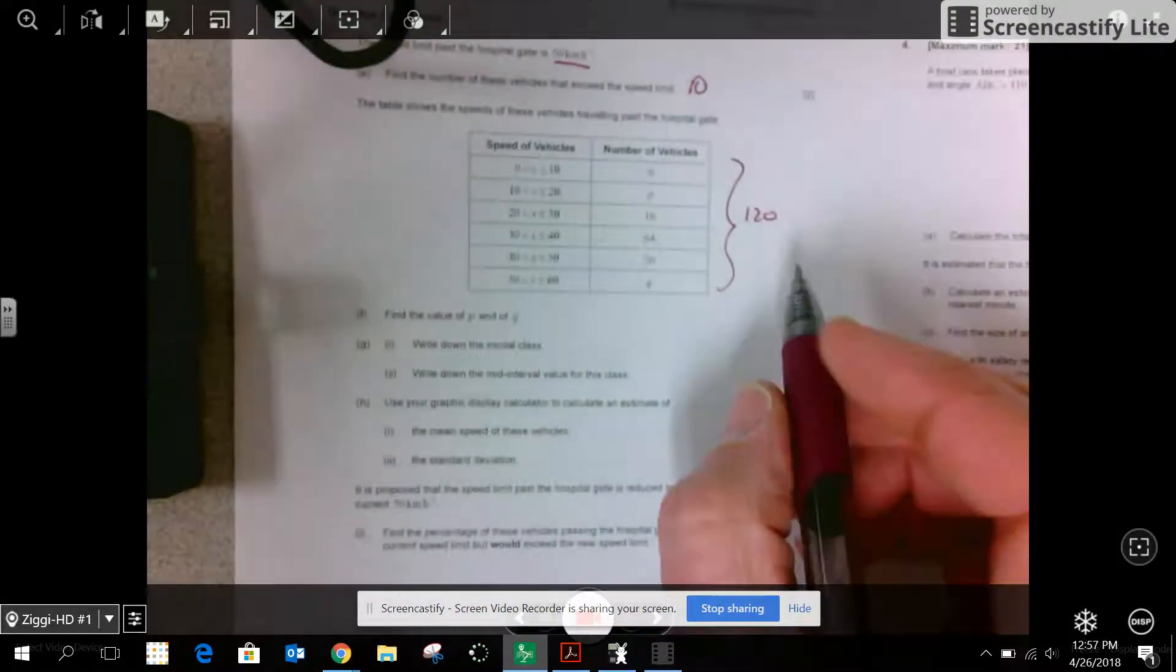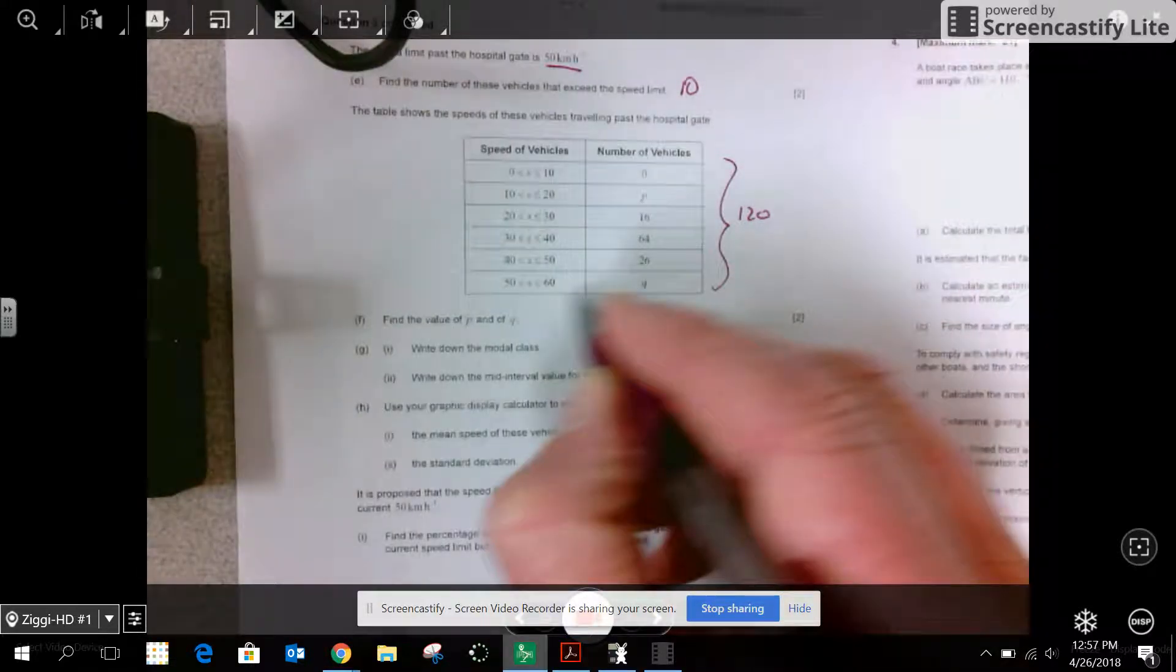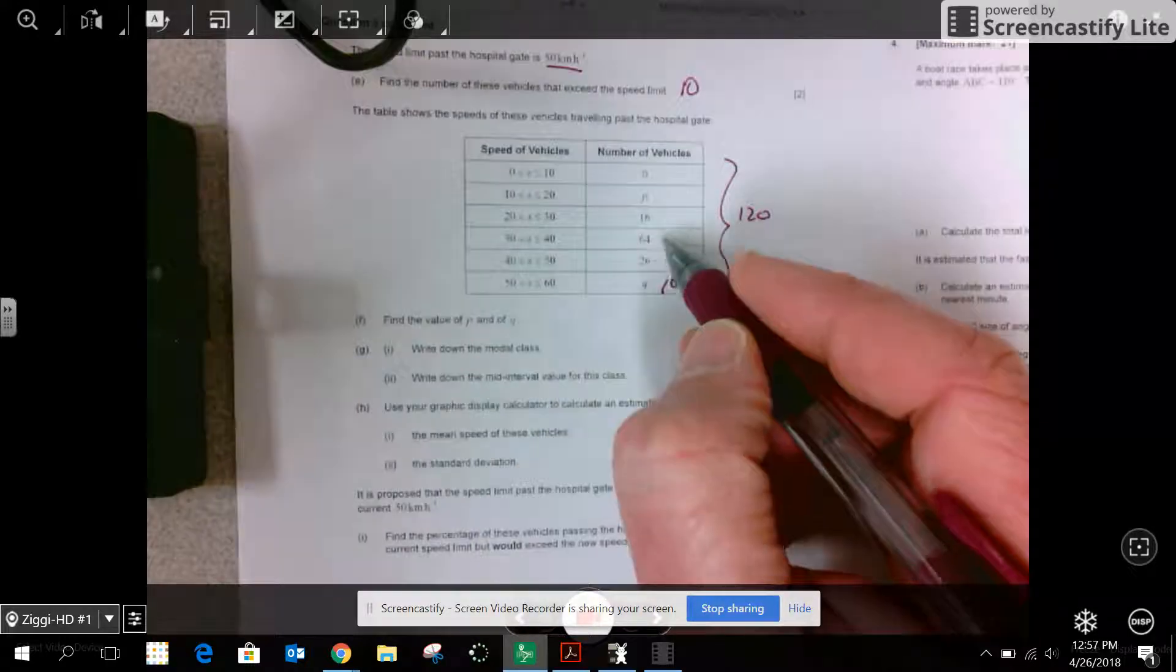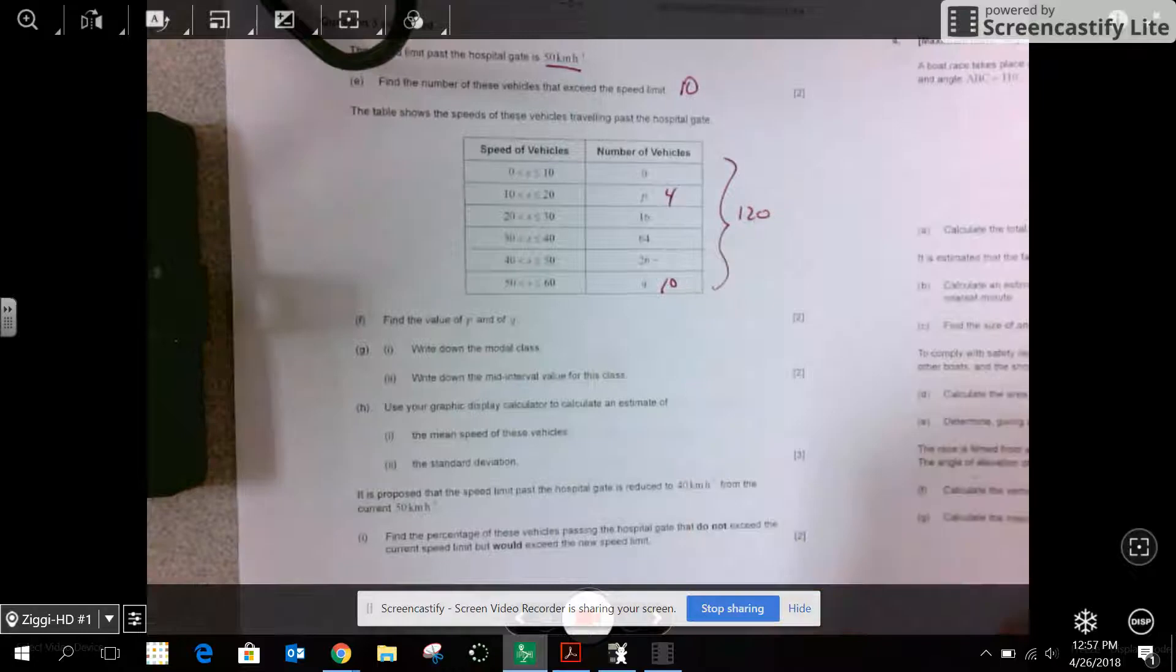That allows me to find out what Q is right now. So 10 were there. And then they all have to add up to 120. So 36, 100, 116. That means P is 4. And if you want, you could estimate from your graph between 10 and 20.